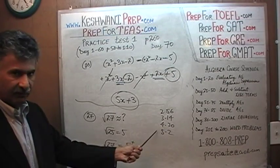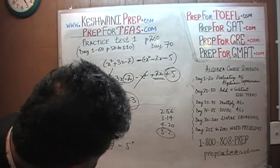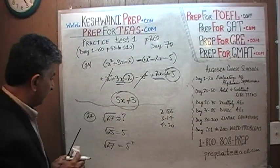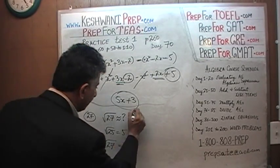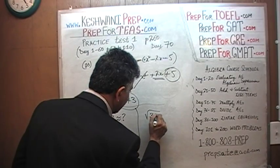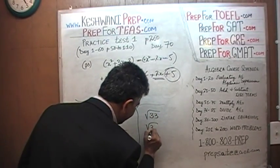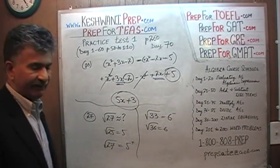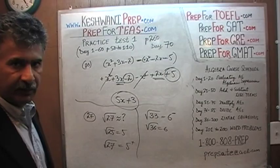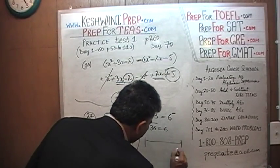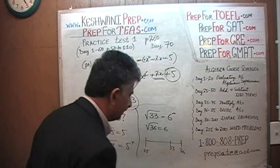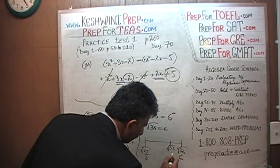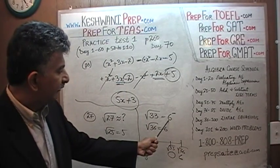The square root of 27 cannot be less than 5, so the answer is 5.2. Now, how would we handle something like the square root of 33? We know the square root of 36 is 6, so the square root of 33 is equal to something a little bit less than 6 — we write that as 6 with a minus sign. Why? Because the scale goes from 25 to 36, and 33 is closer to 36, so square root of 33 is closer to 6.